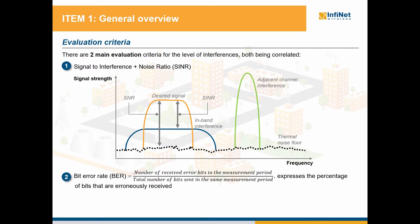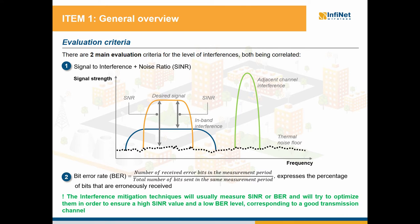The second criteria for determining the quality of the channel is by evaluating the bit error rate. This tells us the percentage of bits that are altered or erroneously received, and it is defined as the ratio between the number of error bits and the total number of bits sent over a specific measurement period. The interference mitigation techniques will usually measure SINR or BER and will try to optimize them in order to ensure a high SINR value and a low BER level corresponding to a good transmission channel. So SINR and BER are correlated and express the quality of the transmission.